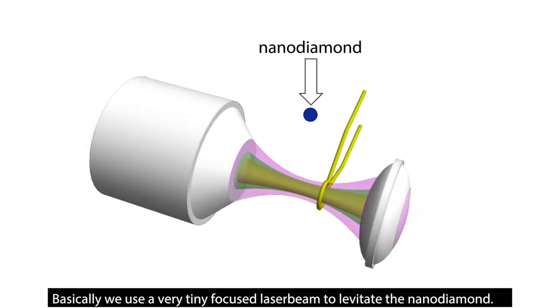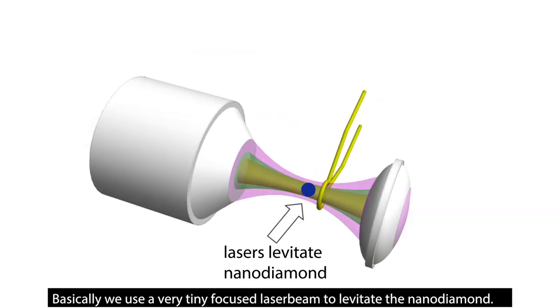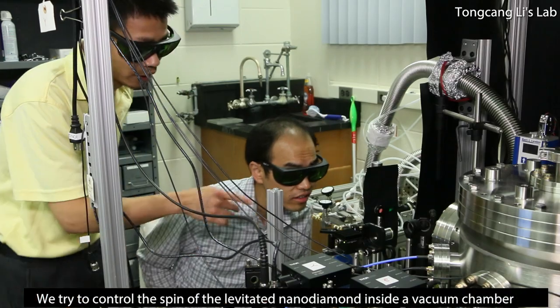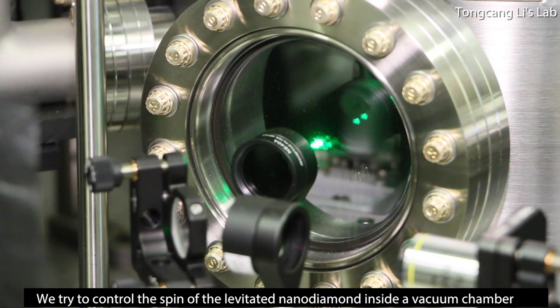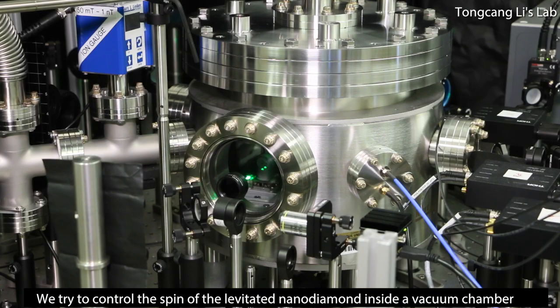Basically we use a very tiny focused laser beam to levitate the nanodiamond. We try to control the spin of the levitated nanodiamond inside a vacuum chamber.